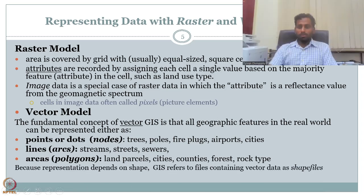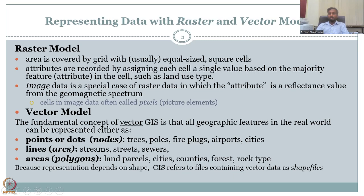So the last part we would like to see here is because the representation depends on shape, GIS refers to files containing vector data as shape files. Since it has a shape, point is a shape, line is a shape and a polygon is a shape, we call this as shape files.